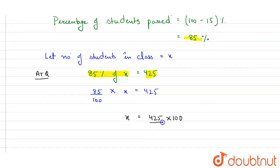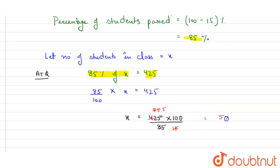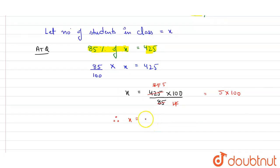In the denominator we have 85. Since 425 and 85 are both multiples of 5, we can cancel them. Dividing 425 by 5 gives 85, and 85 by 5 gives 17. So x equals 5 multiplied by 100, which gives x equals 500. So the number of students in the class is 500.